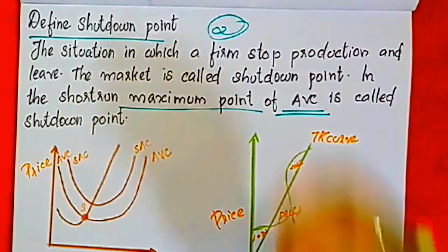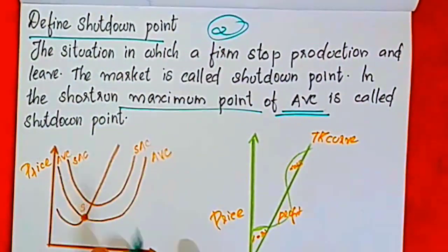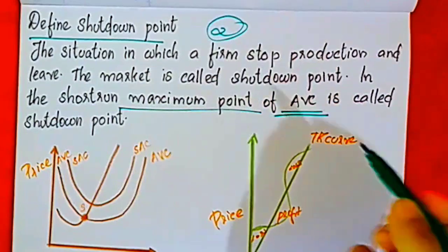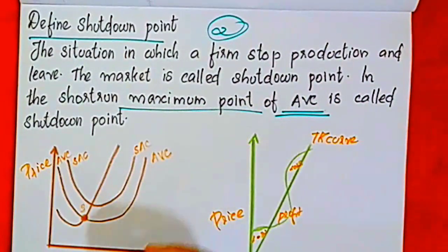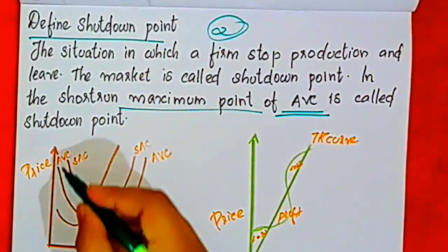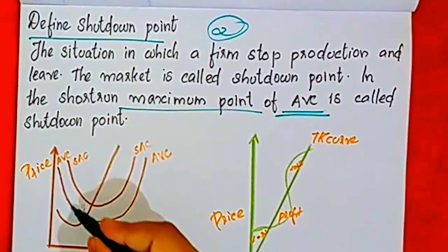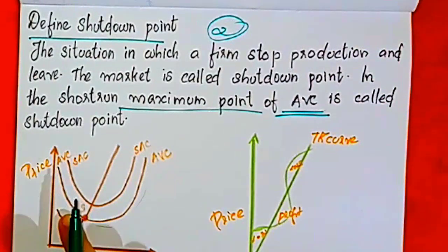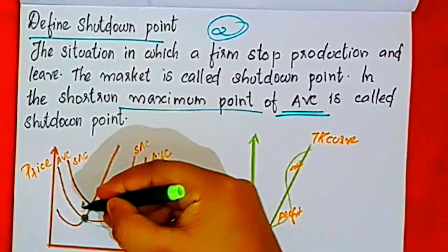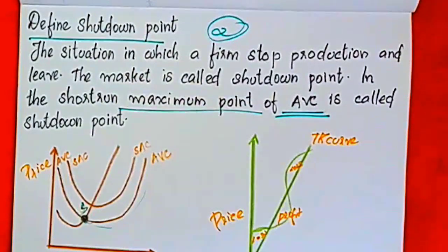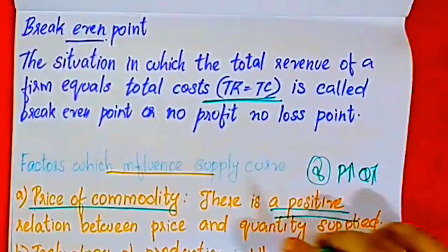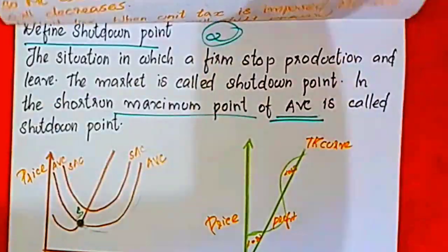Now, we will look at the diagram. The maximum point of AVC relates to the shutdown point of AVC. The case for the break-even point is also related.